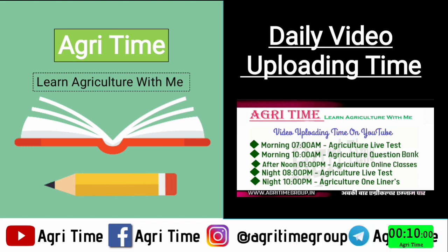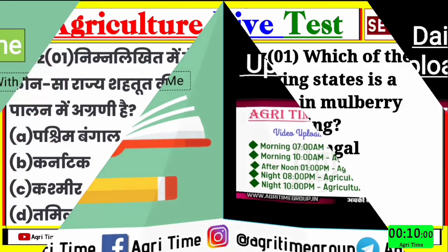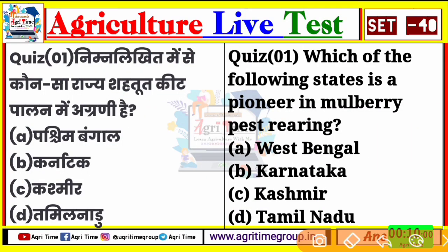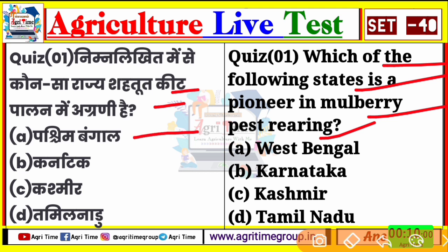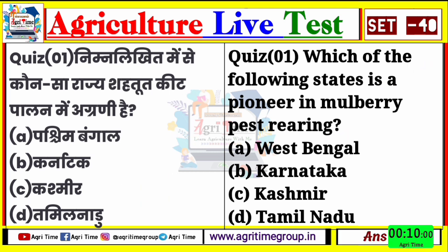आज का live test का पहला question है - निम्नलिखित में से कौन सा राज्य सहतूत कीट पालन में अग्रणी है? Which of the following state is a pioneer in mulberry silkworm rearing? Options दिये हैं: पंजाब, पश्चिम बंगाल, कर्नाटक, कश्मीर और तमिलनाडु। मैं आपको 10 सेकंड दूँगा, अगर आपको answer पता है तो comment box में जरूर comment करें।